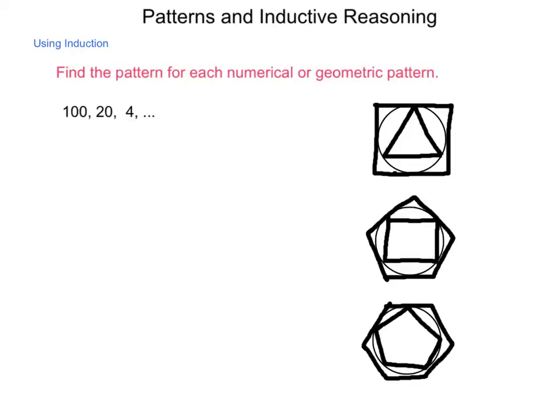Is there a way that we move from one item to the next in this sequence of numbers? And would we be able to use that to make predictions about the future? Well, to move from 100 to 20, we can either subtract 80, or we can divide by 5. To move from 20 to 4, we are subtracting 16, or dividing by 5.